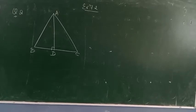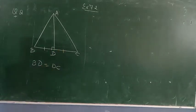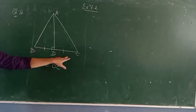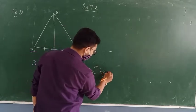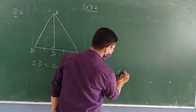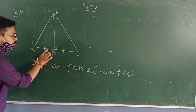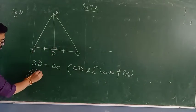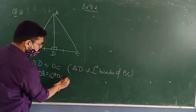This is question number two. In triangle ABC, AD is the perpendicular bisector of BC. That means BD equals DC — do you agree with this? AD is the perpendicular bisector of side BC, so BD equals DC. And angle ADB equals angle ADC equals 90 degrees.